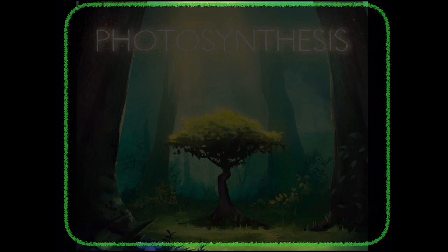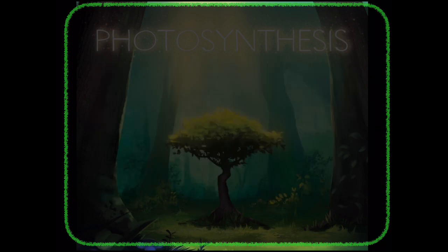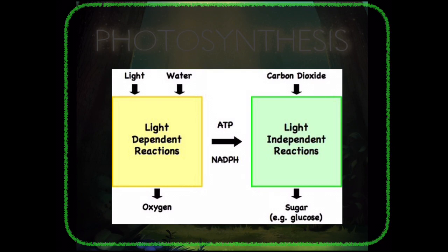In the first two videos we covered chloroplast structure and pigments. Now let's start with the actual process of photosynthesis. Photosynthesis occurs in two phases: the first phase is the light reaction and the second is the dark reaction. These two processes — the light-dependent reaction and the light-independent or dark reaction — are basically interdependent.